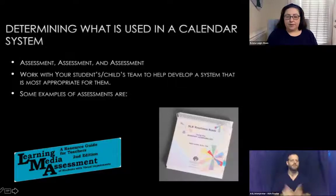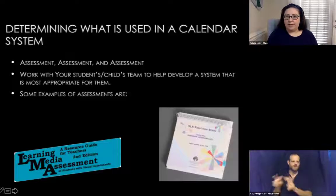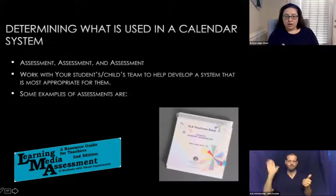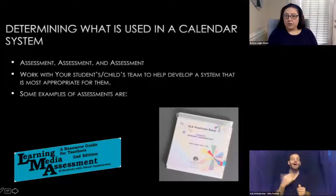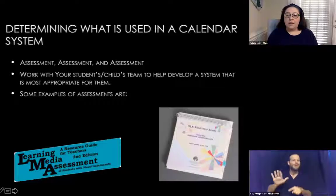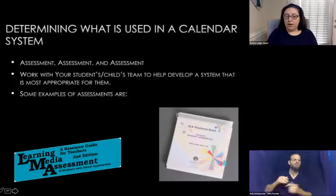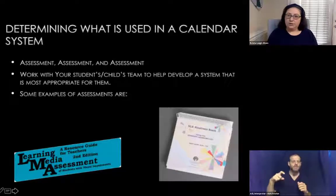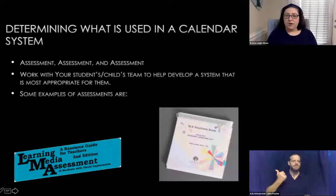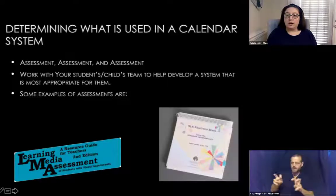Some examples of assessments — we could do full trainings on these alone. The learning media assessment is the typical tool for a teacher of the visually impaired with an academic student, determining whether they are tactile, visual, or auditory learners. The sensory learning kit looks at kids with more complex communication needs and examines all sensory channels. We may incorporate scent or movement into the calendar system, and it gives us a good idea of what materials the child can access and what they're interested in.